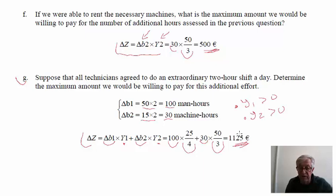For the last question, we consider a 2-hour extraordinary shift per day. Going from 8 to 10 hours increases man-hours by 100 (50 technicians × 2 extra hours) and machine-hours by 30 (15 machines × 2 hours), simultaneously affecting both binding constraints. Since both shadow prices are positive and the base doesn't change, the increase in Z is: 100 × 6.25 + 30 × (50/3). The shadow price of resource 1 is 6.25 (= 25/4). This total is the maximum we can pay the technicians for the extra shift — paying less yields a profit. This concludes the problem and the lecture.